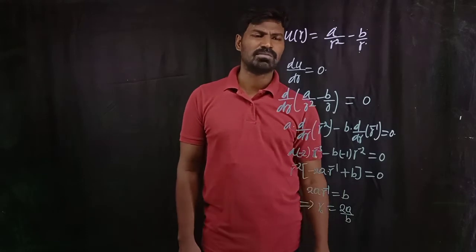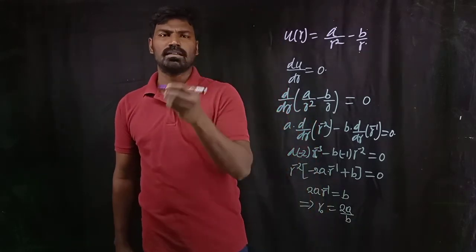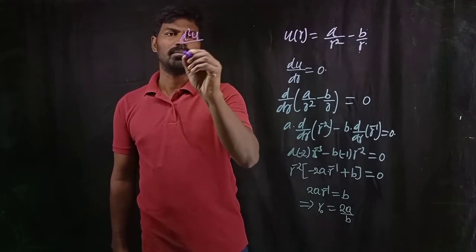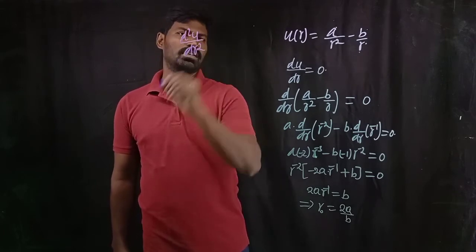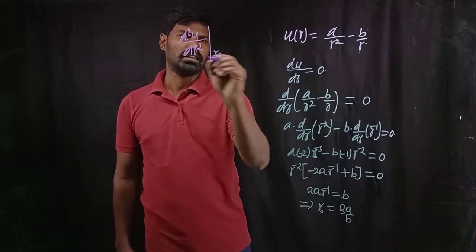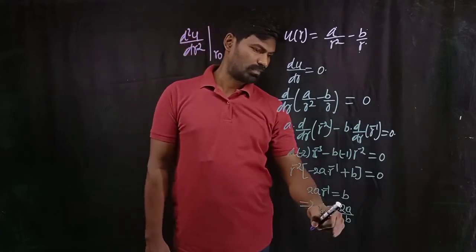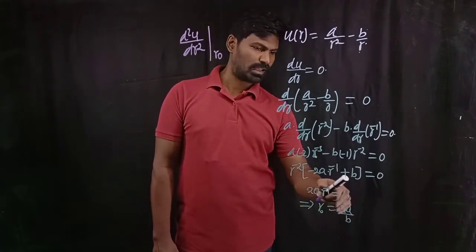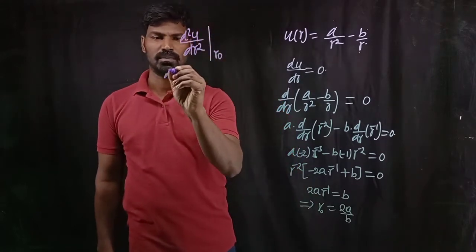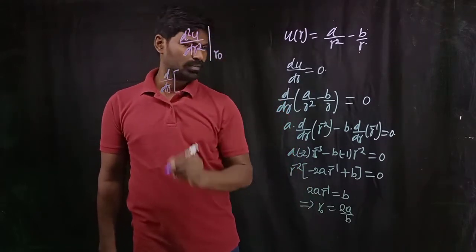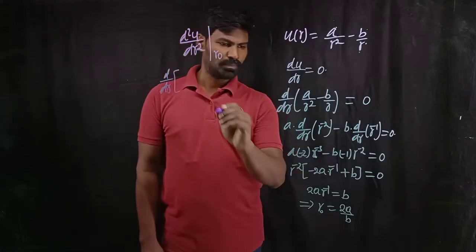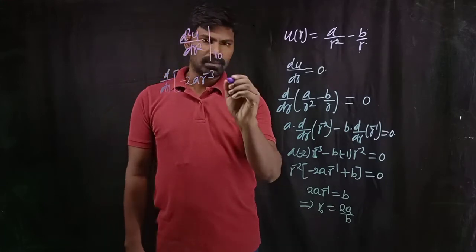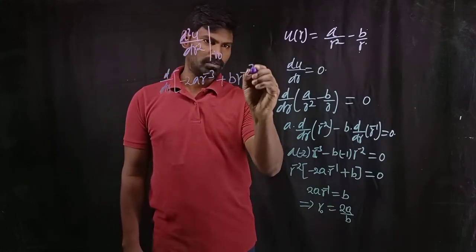At R naught, potential energy may be maximum or minimum. To check whether it is maximum or minimum we go to the second step: the second differentiation. We need d²U divided by dR² at R naught, where R naught equals 2A/B. For this purpose, I take dU/dR — which I got as minus 2A into R to the power minus 3 plus B into R to the power minus 2 — and differentiate it one more time.